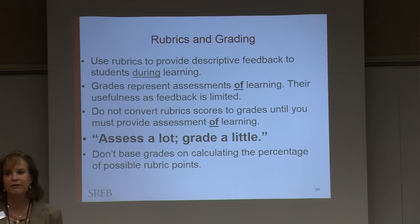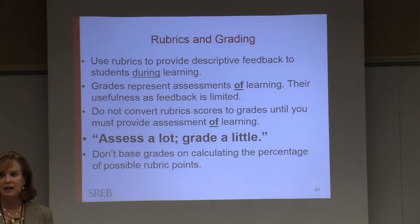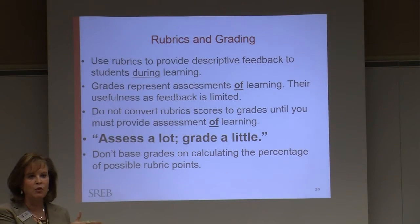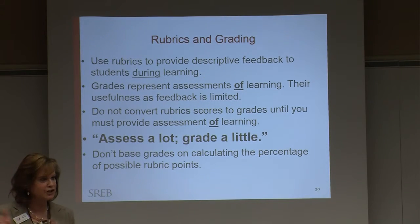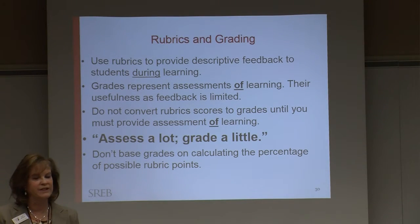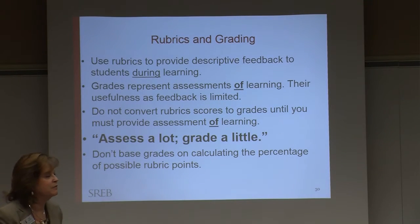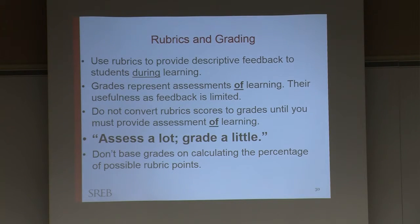Remember: a 4 is above grade level or advanced. A 3 is usually at the proficient level. A 2 is basic. And then a 1 is 'not yet.' So at most, do it by letter grade: a 4 is the A or A-plus. At least at proficient, you ought to be at least a B. Be sure that you don't just base a grade on calculating the percentage of rubric points — that is, 100, 75, 50, and so forth.